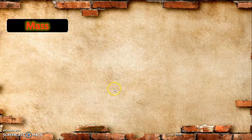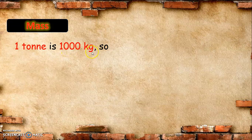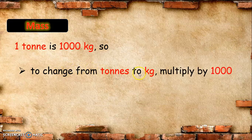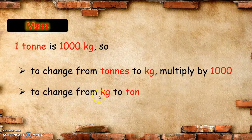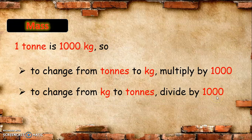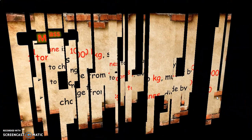Let us have mass. 1 ton is equal to 1,000 kilograms. To change from tons to kilograms, we need to multiply by 1,000. If you want to change from kilograms to tons, we need to divide by 1,000. Let us have another example.